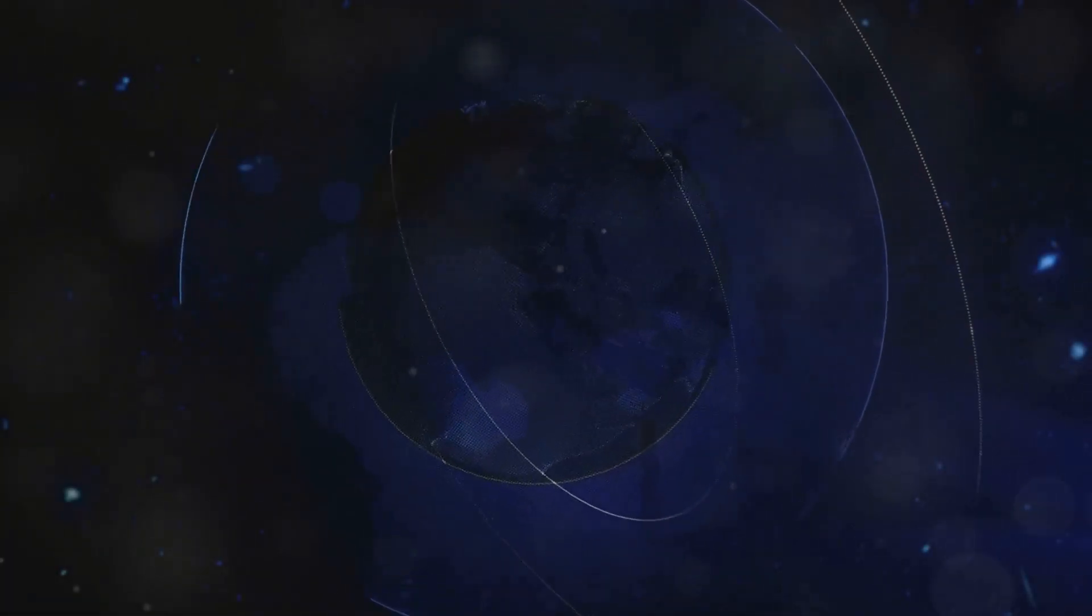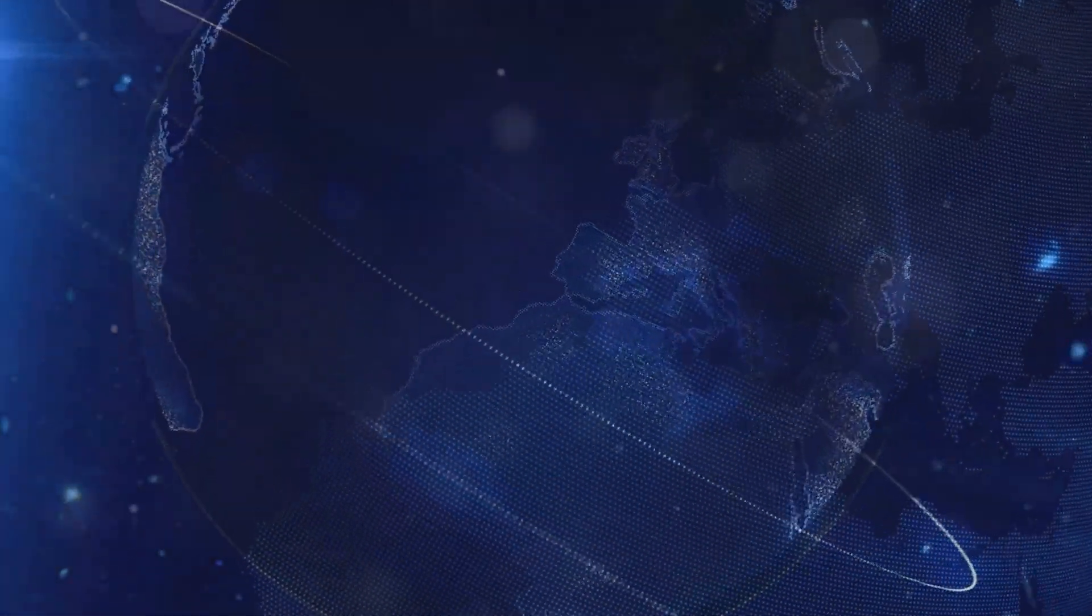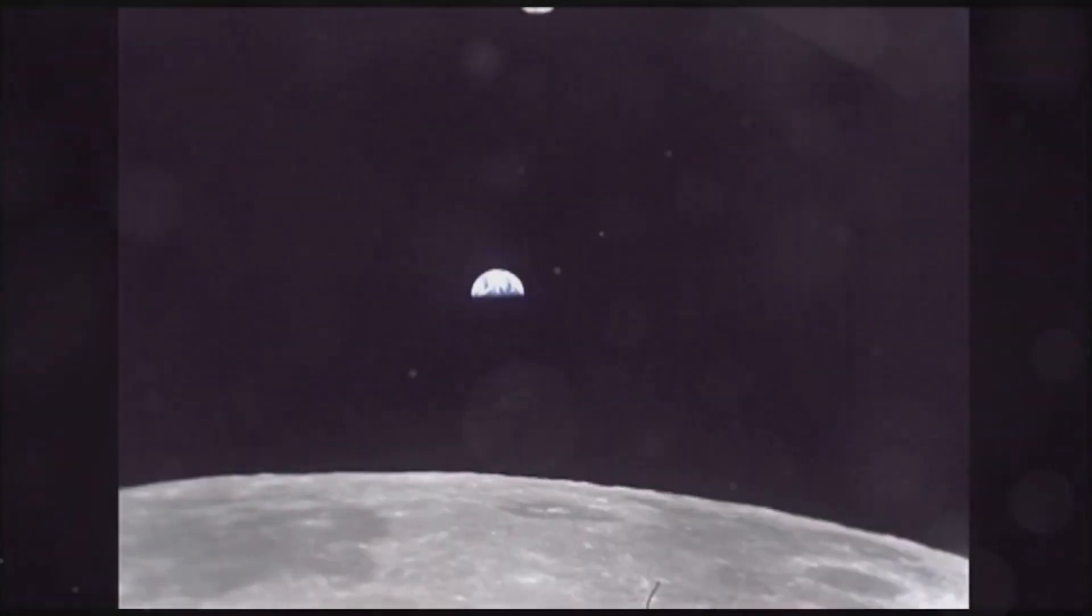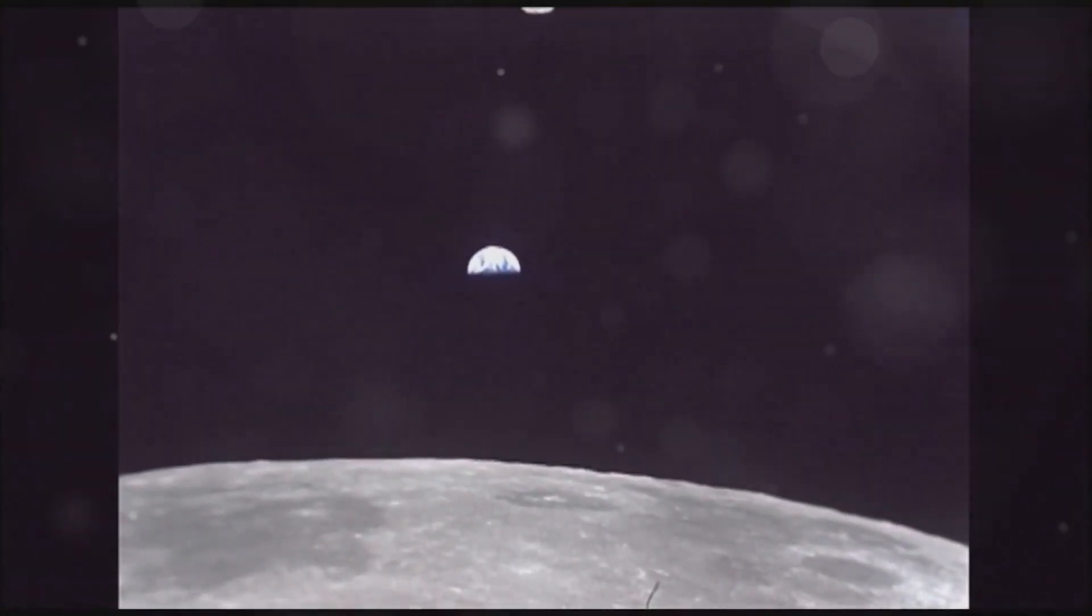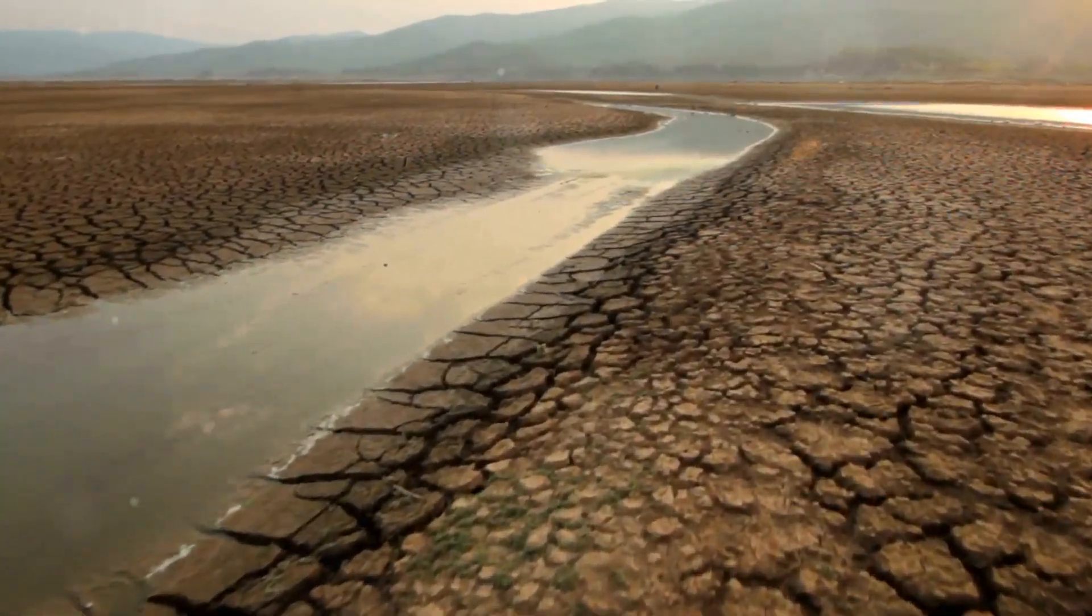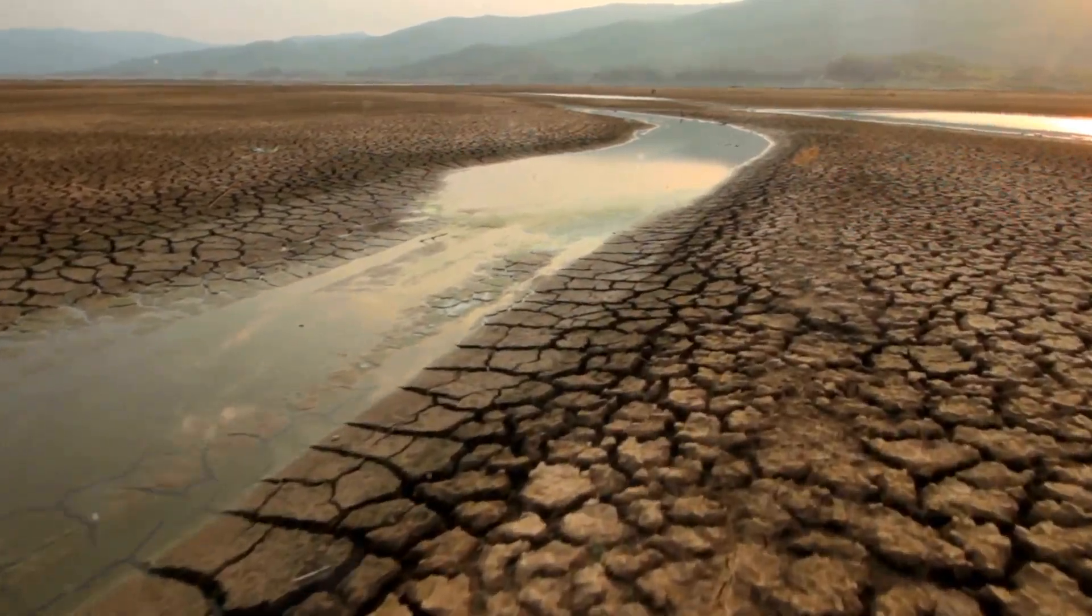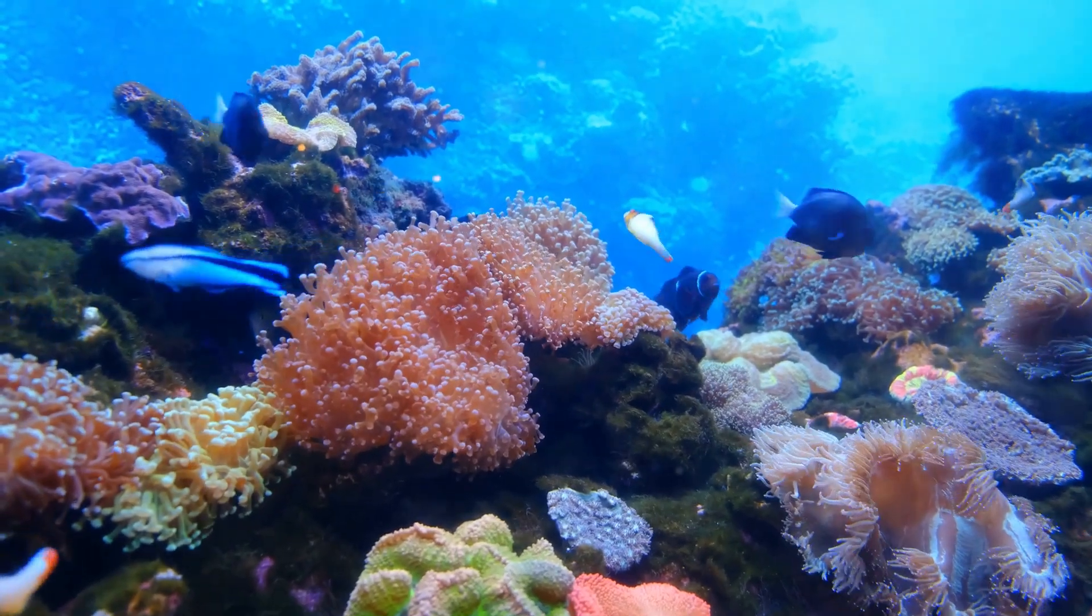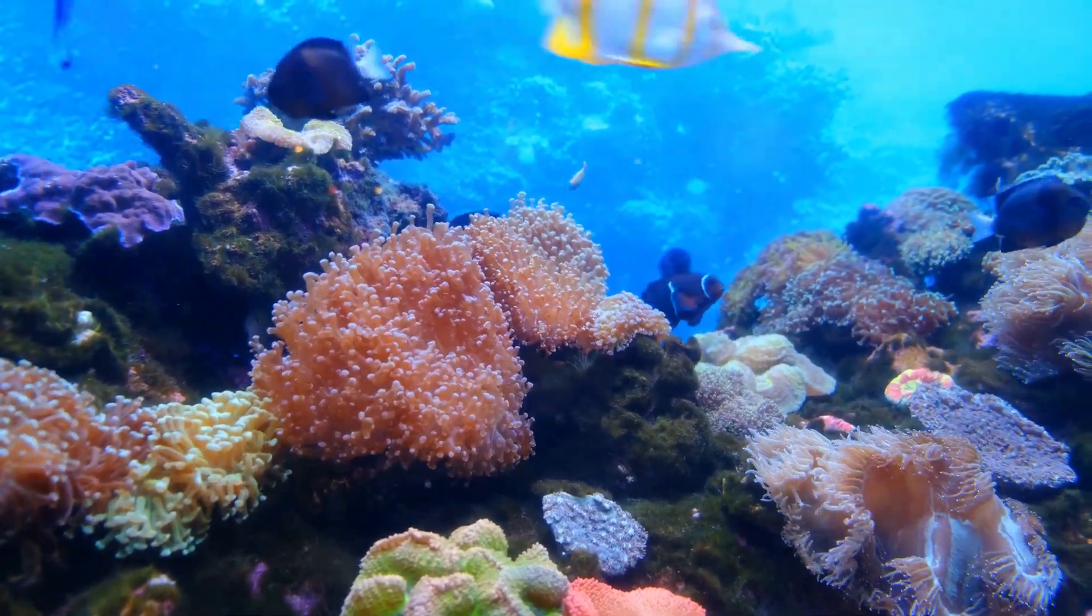But without the moon, Earth's axial tilt would become wobbly, like a top about to fall over. Without the moon, Earth's tilt could vary much more dramatically, swinging between 10 and 45 degrees. Over thousands of years, this wobble could cause extreme shifts in our planet's climate. The stability of our planet's rotation is crucial for life as we know it.